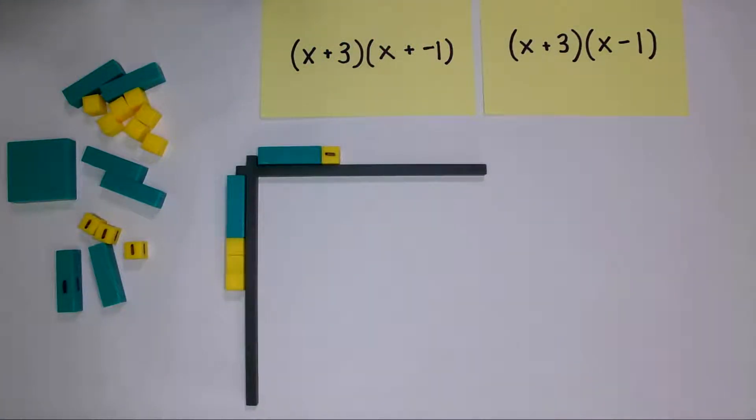So before you jump into multiplying these expressions, it's good first to review the rules of multiplying integers with your students. Remind students that when you multiply two integers with the same sign the product is going to have that same sign. When you multiply integers with different signs the product is going to be negative.